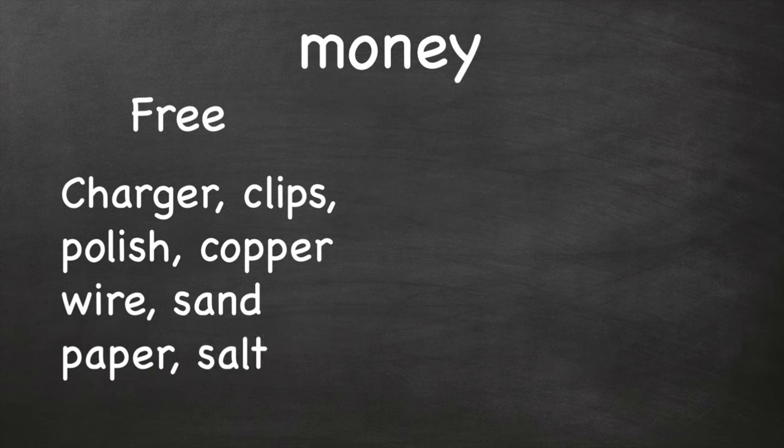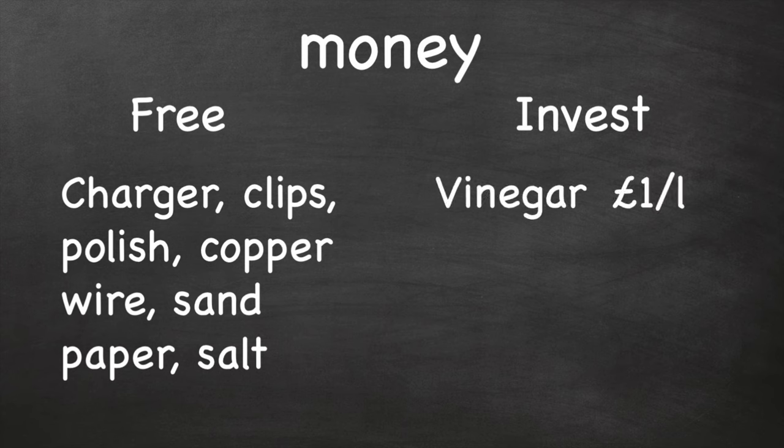And I only had to invest in the cheapest distilled white vinegar I could find, which is less than a pound a litre in any supermarket. And finally, we had the largest investment, which was the nickel anode, which cost me £9 delivered from Amazon. So, I basically spent £10.